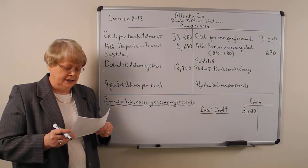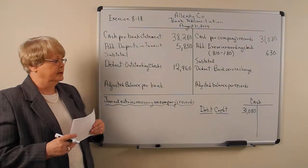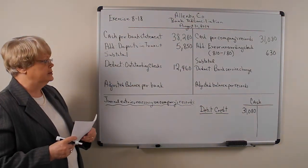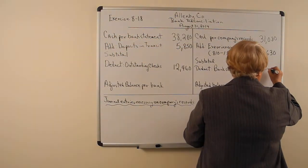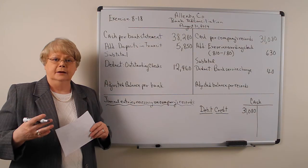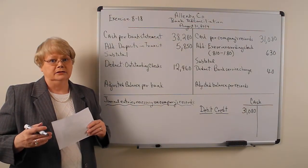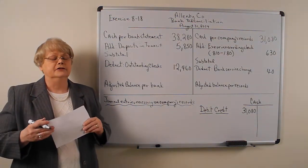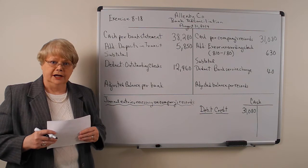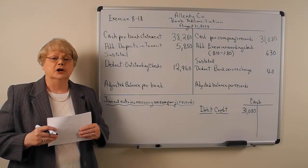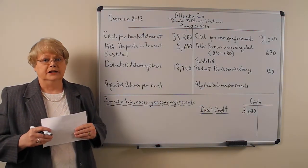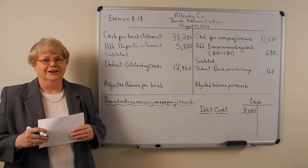The last item is a bank debit memo for service charges of $40. The bank would have already deducted that from the bank statement, but we have not yet deducted it from the accounting records, so we need to subtract the $40 from our balance per the accounting records. Keep in mind that credits on the bank statement are increases and debits are decreases — the opposite of what you do on accounting records — because your account on the bank's records is a liability.